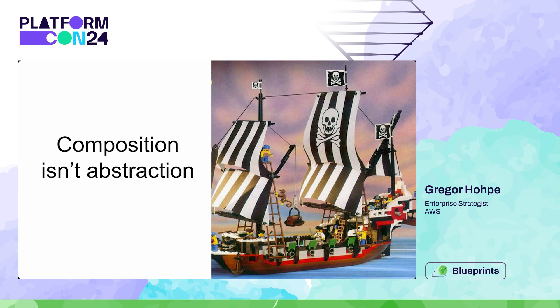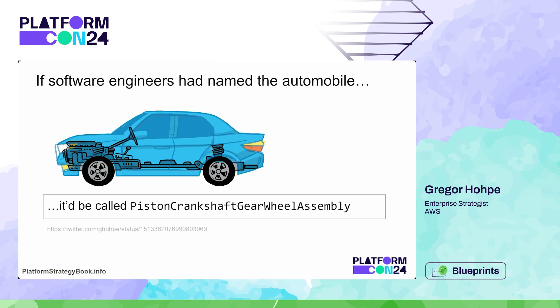It's easier to start with a bad example. When we build reusable things, we are always tempted to name them after the ingredients, because as engineers we build the ingredients and we're proud of them. My going joke is that if engineers had named the car, they would have called it something like 'piston, crankshaft, gear, wheel assembly singleton factory.' That isn't a good abstraction — it's what we call composition, the sum of many technical pieces. What's interesting is not the technical pieces underneath, but the purpose of the thing.